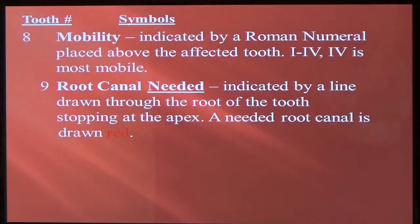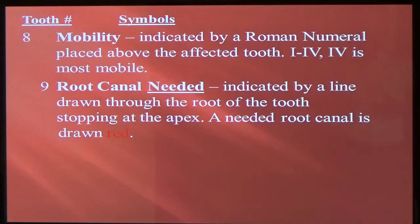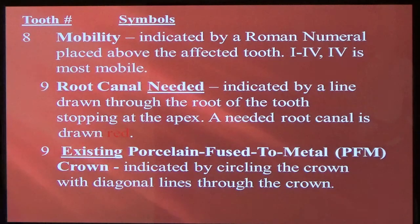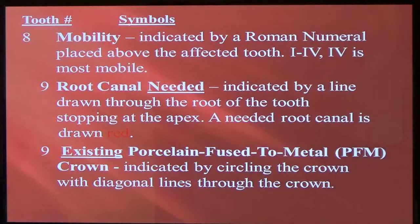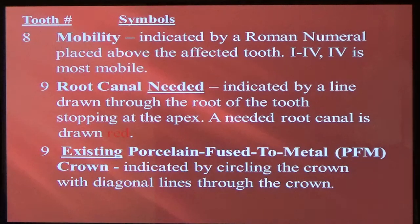A needed root canal is indicated by a red line through the root, from the base of the crown up to the apex of the tooth. An existing PFM (porcelain fused to metal) crown is indicated by circling the crown with diagonal lines — hatch marks — drawn through the crown. If it has metal that can be seen, you can draw the metal on the lingual side wherever it's seen. Drawing it as accurately as possible gives you more information when looking at the chart.